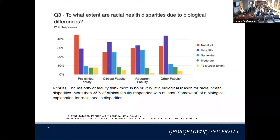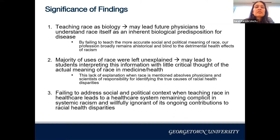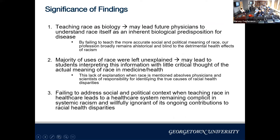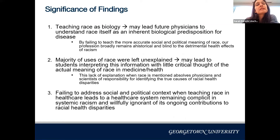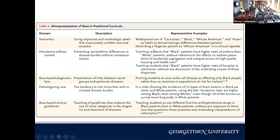When we leave race unexplained, it leads students to interpret that information without critical thought, and we remain complicit in systemic racism by ignoring ongoing contributions to racial disparities and failing to address race as a social and political context. There's a paper from this year — 'Misrepresenting Race: The Role of Medical Schools in Propagating Physician Bias' — that documents similar findings and the different ways race is misrepresented in pre-clinical curricula.